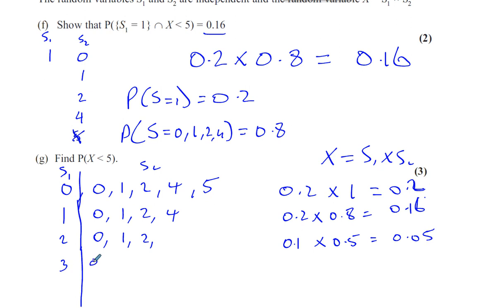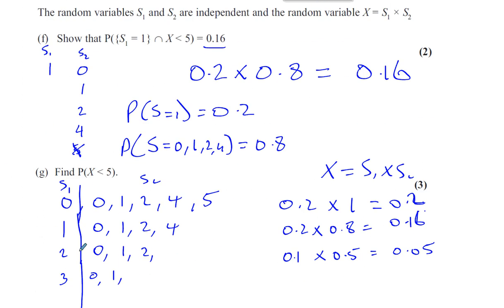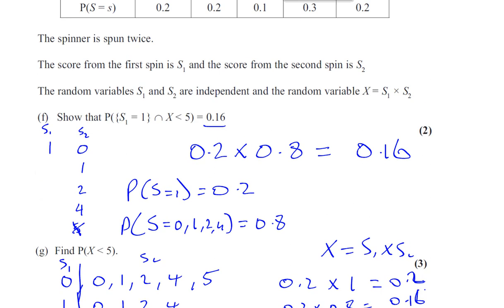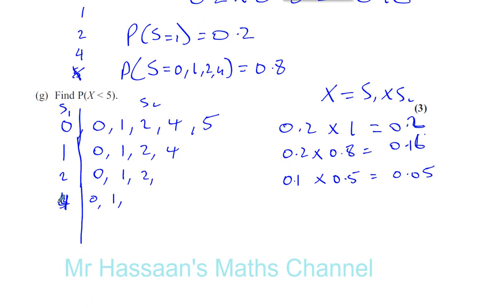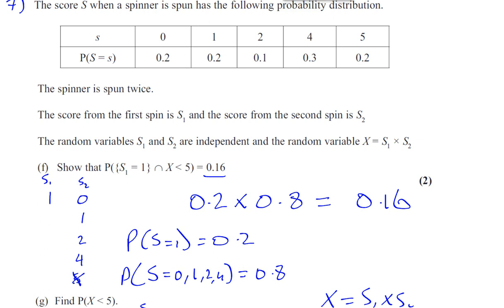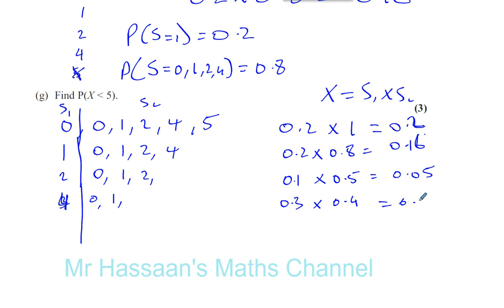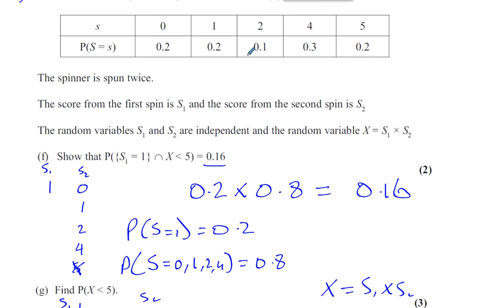There's no 3 on the spinner — the next value is 4. If S1 = 4, the valid S2 values are 0 and 1 only, giving combined probability 0.2 + 0.2 = 0.4. So 0.3 times 0.4 gives 0.12. Then if S1 = 5, only S2 = 0 works, giving a product of 0. The probability of getting a 5 is 0.2 times 0.2 for getting a 0, giving 0.04.